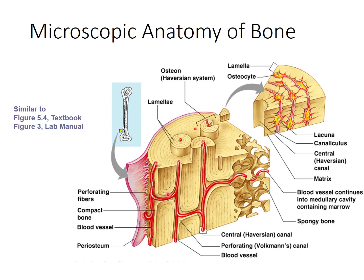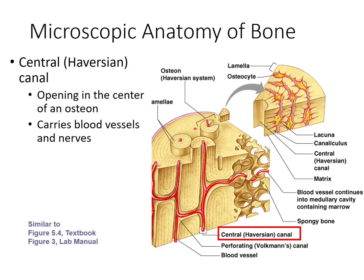Those Volkmann's canals are going to merge with these other canals, which are called central or Haversian canals. The nerves and blood vessels pass perpendicular to the long axis of bone, bringing a supply of nutrients to the bone cells, and it's around this supply of nutrients that bone tissue is formed in concentric circles.